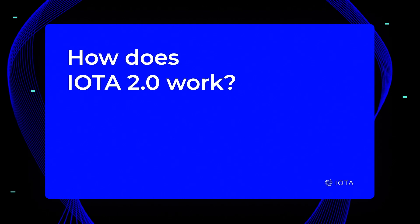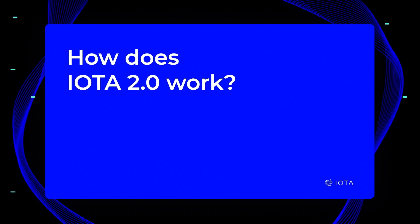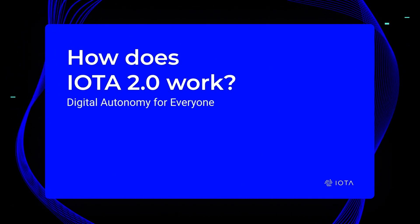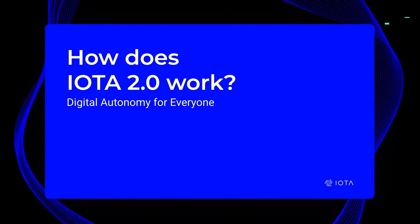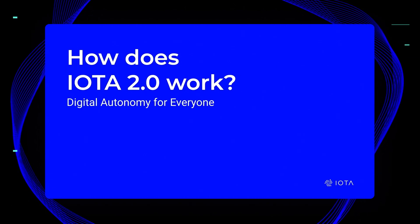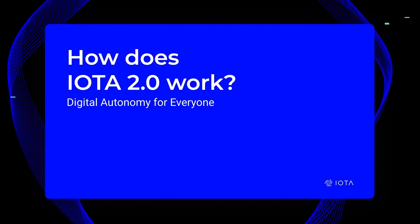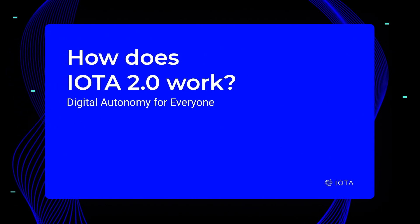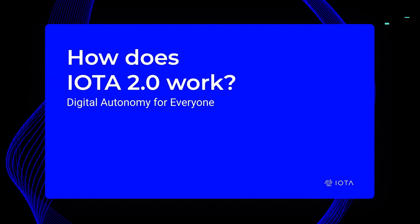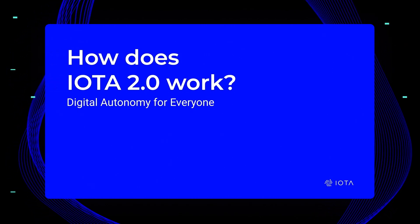To understand how IOTA 2.0 works, we have to understand what we're trying to accomplish, and that is digital autonomy for everyone. So how do we get digital autonomy? It's by providing a DLT protocol that satisfies certain design principles.